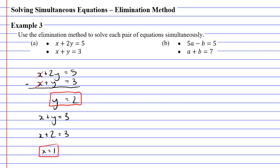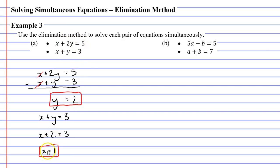Now I want to double check. I already used the second equation to find x, so I'll check the first equation with y equals 2 and x equals 1. So x is 1, y is 2: 2 times 2 is 4, plus 1 gives me 5. My solutions are correct.